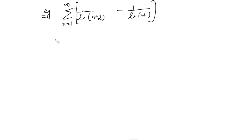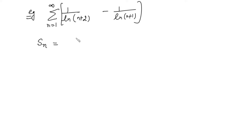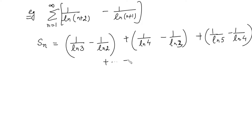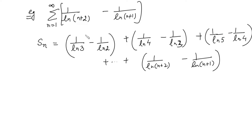We find the sum by computing the nth partial sum. When n=1: 1/ln3 − 1/ln2. When n=2: 1/ln4 − 1/ln3. And so on, up to the last term 1/ln(n+2) − 1/ln(n+1). The intermediate terms cancel: the 1/ln3 from the first term cancels with the second, and so on.